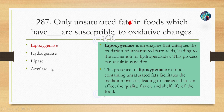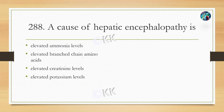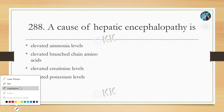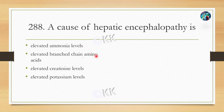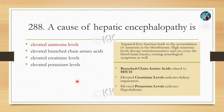A cause of hepatic encephalopathy is: option A elevated ammonia levels, option B elevated branched-chain amino acids, option C elevated creatinine level, option D elevated potassium level. The correct option is option A, elevated ammonia levels. Hepatic encephalopathy is characterized by impaired liver function, which leads to accumulation of ammonia in the bloodstream as the liver cannot filter it out, resulting in disruption of neurotransmitters and neurological symptoms.